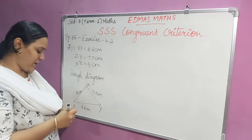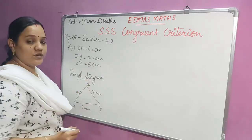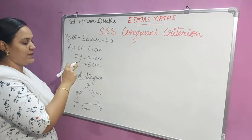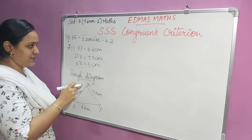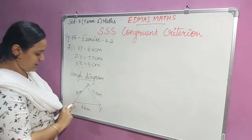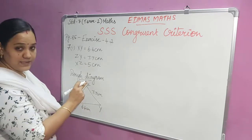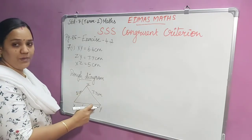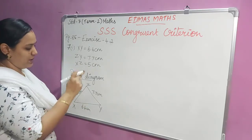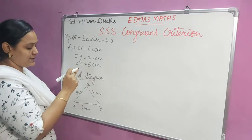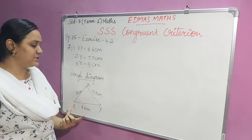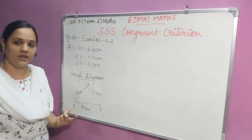Now we have to draw the rough diagram first. For that we assume a triangle and here the triangle is XYZ, with vertices marked as X, Y and Z. As given in the question, XY is 6.4 centimeters, ZY is 7.7 centimeters, and XZ is 5 centimeters. Drawing the rough diagram first makes it easy for us to construct the triangle.